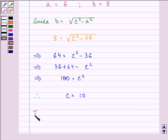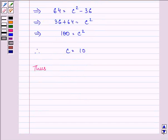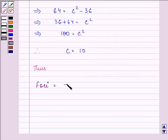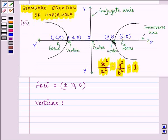Now, we have foci as (±c, 0), so it will be (±10, 0). And vertices are (±a, 0), so we have (±6, 0).